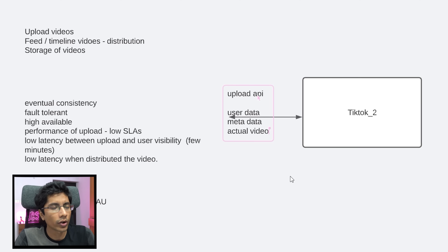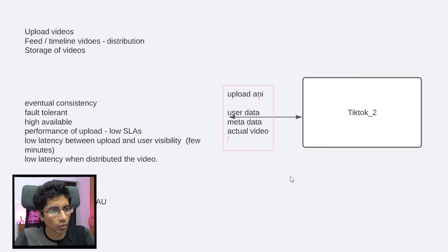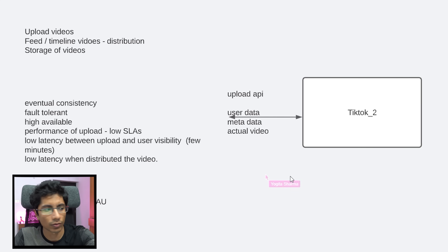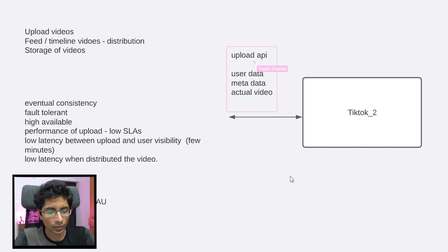What we want to do ideally is allow videos only of seven seconds. In case there is a special use case, we'll look at it later, but more than seven seconds. Okay, makes sense. So this will be the upload API.